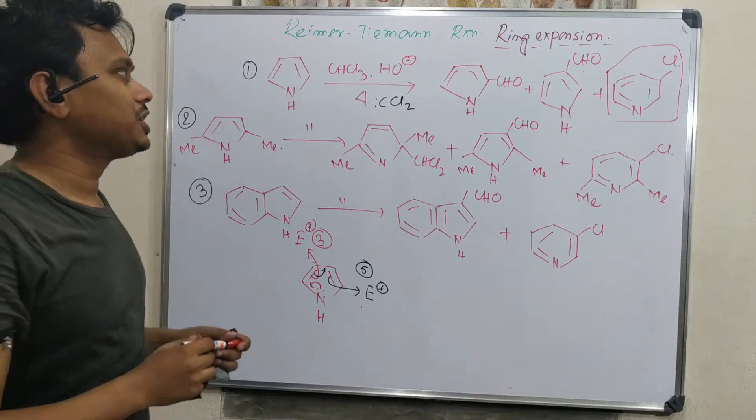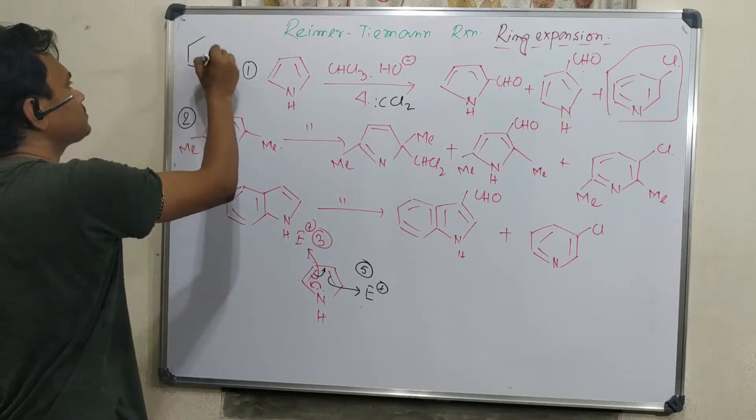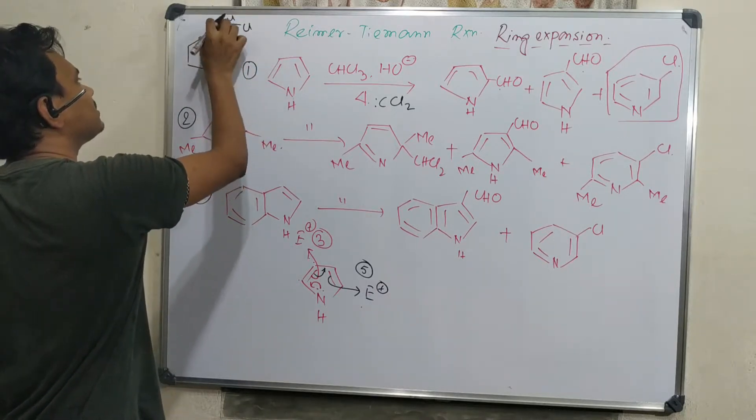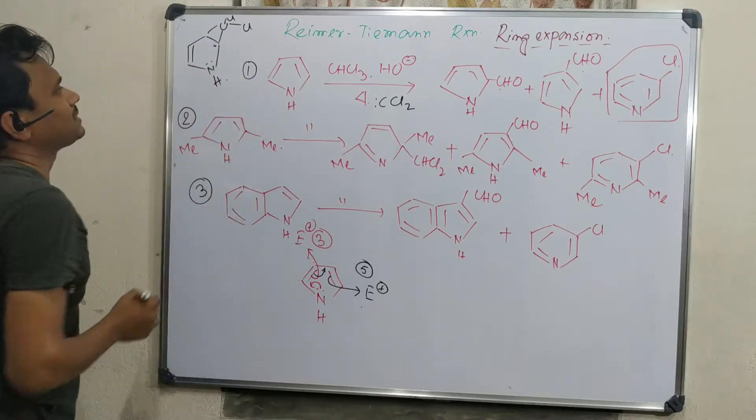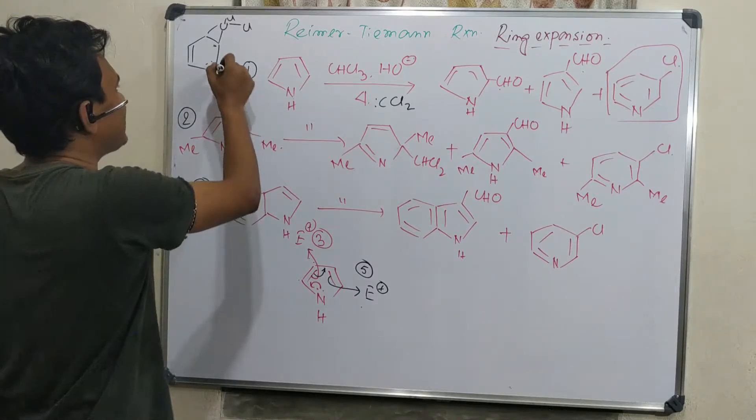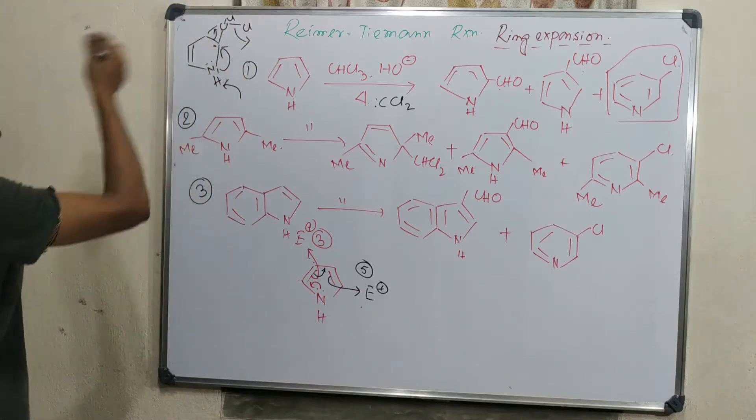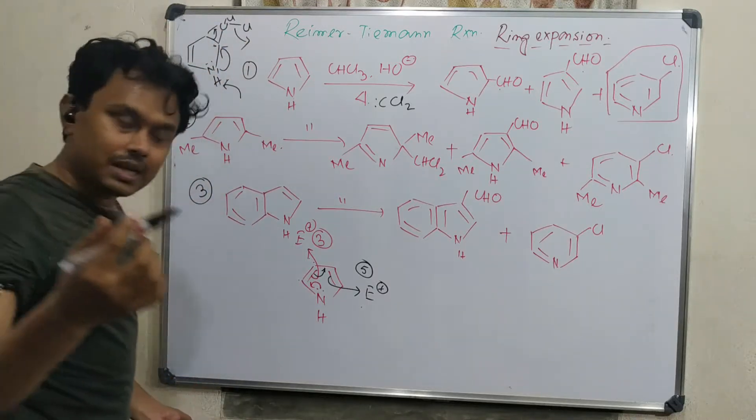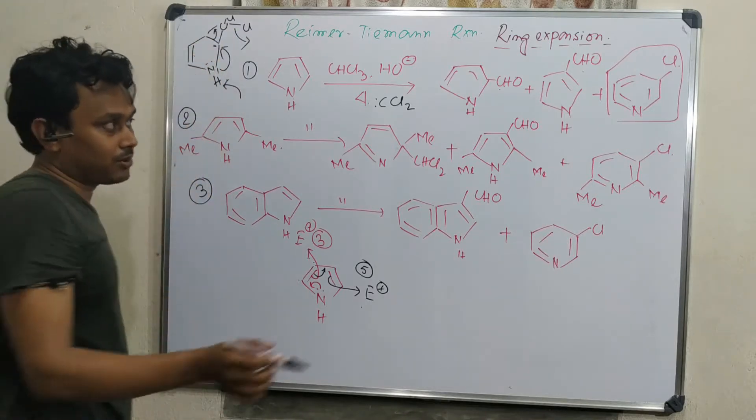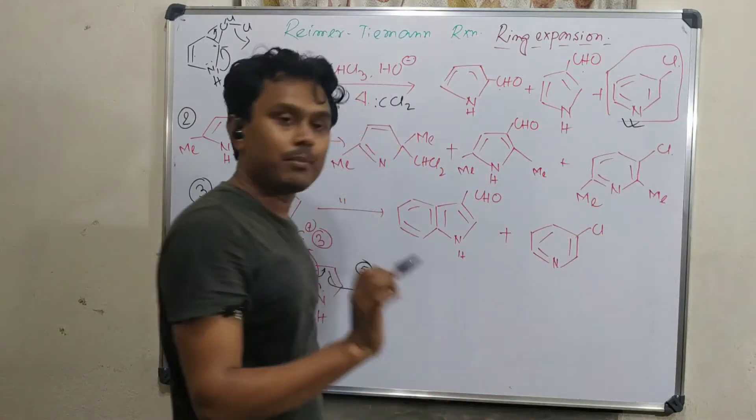As I told, dichlorocarbene addition to the double bond is possible. If this dichlorocarbene added to this double bond similarly, CCl2 in this way, and under basic condition this proton would be abstracted and a negative charge will be generated. That negative charge will attack here, this will go here, and this bond will break. This five-member ring will be expanded into six-member ring and one double bond introduced. One, two, previously one, three, so six double bond aromatic with one CCl added. This is happening through ring expansion.